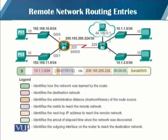For remote network routing entries, a particular routing table entry begins with 'D', which identifies how the network was learned — in this case, via EIGRP. The next part identifies the destination network, which is 10.1.1.0/24. Then comes the administrative distance, which identifies the trustworthiness of the route source — a lower value means the route source is preferred. This is followed by the metric to reach the remote network, the next hop IP address, the amount of elapsed time since the network was discovered, and the outgoing interface on the router to reach the destination network.